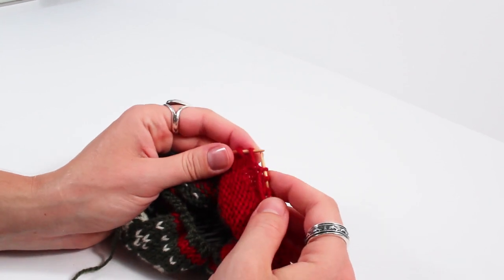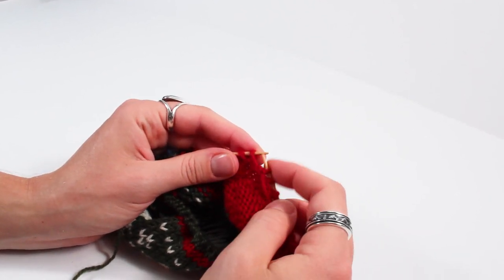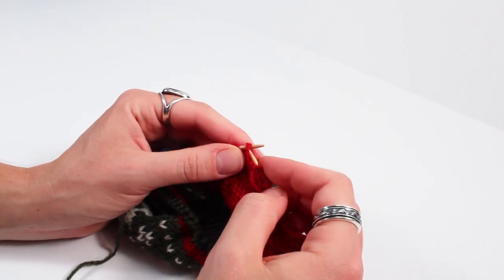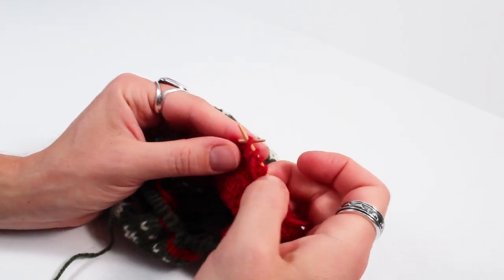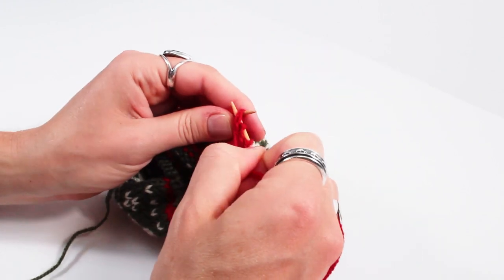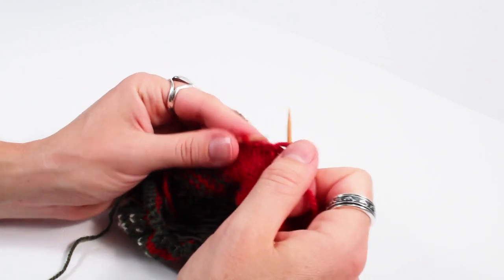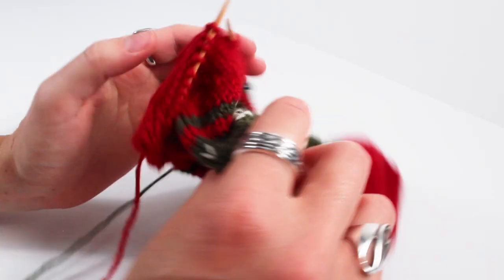Here on the purl side you can see the double stitch. And again we're just going to work this as one stitch going through both legs and purling that stitch. And then we're ready to turn the work again.